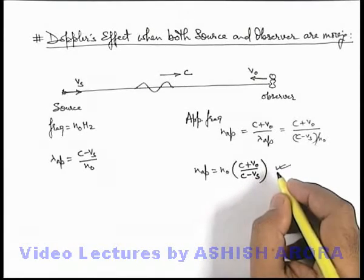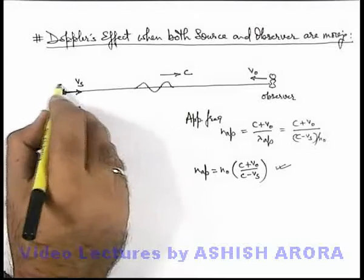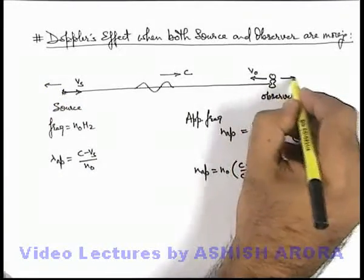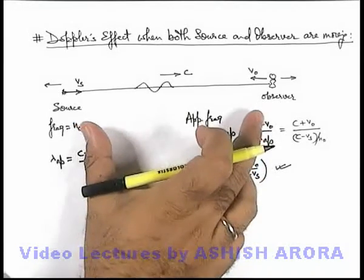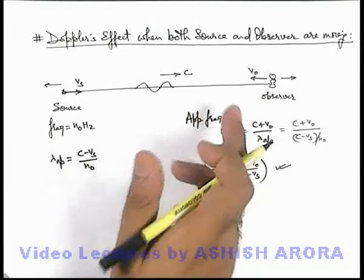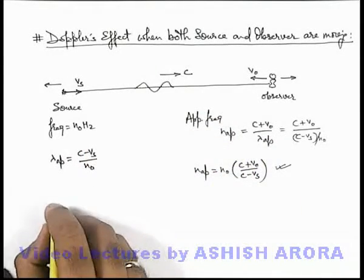And in general, we can use an expression whether source can move towards or away, observer can also move towards or away. So in this situation we know well when source and observer are approaching, the frequency will increase. When these are receding, the frequency will decrease.